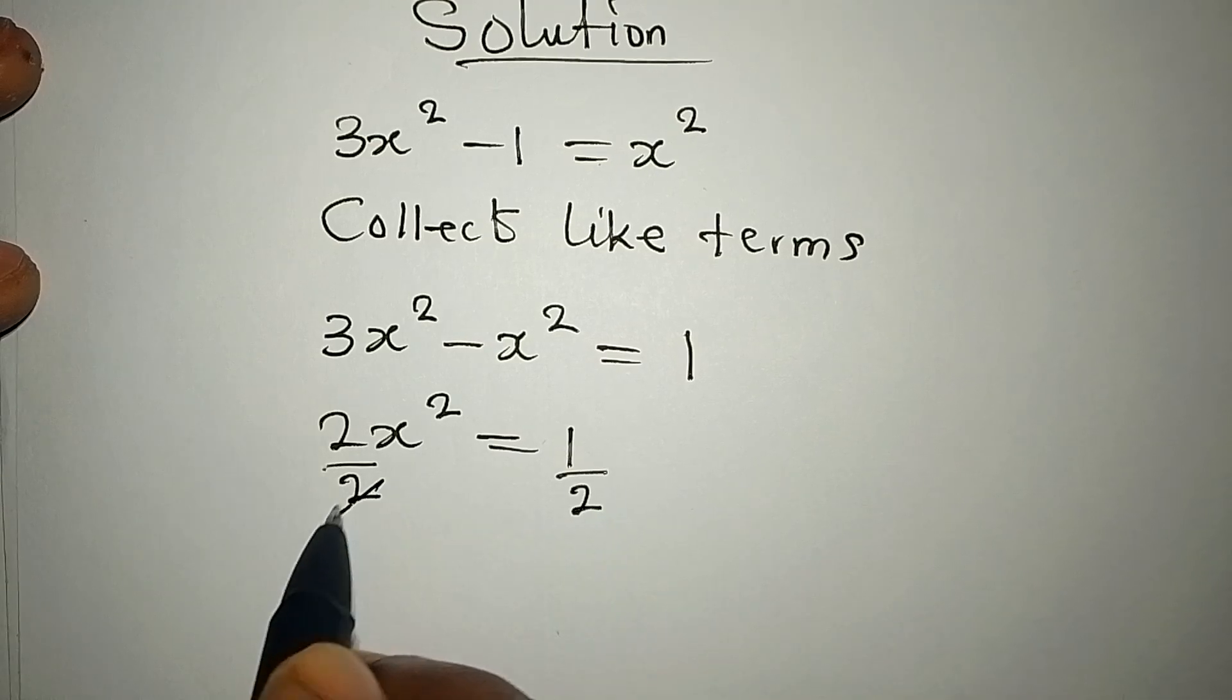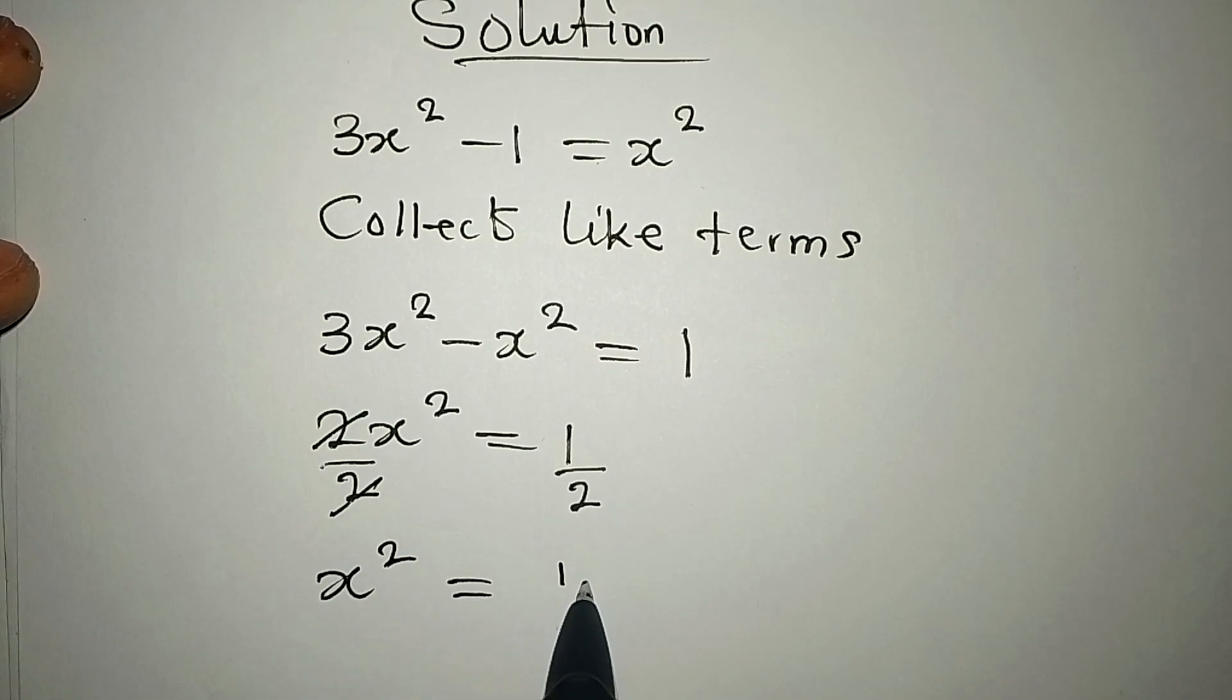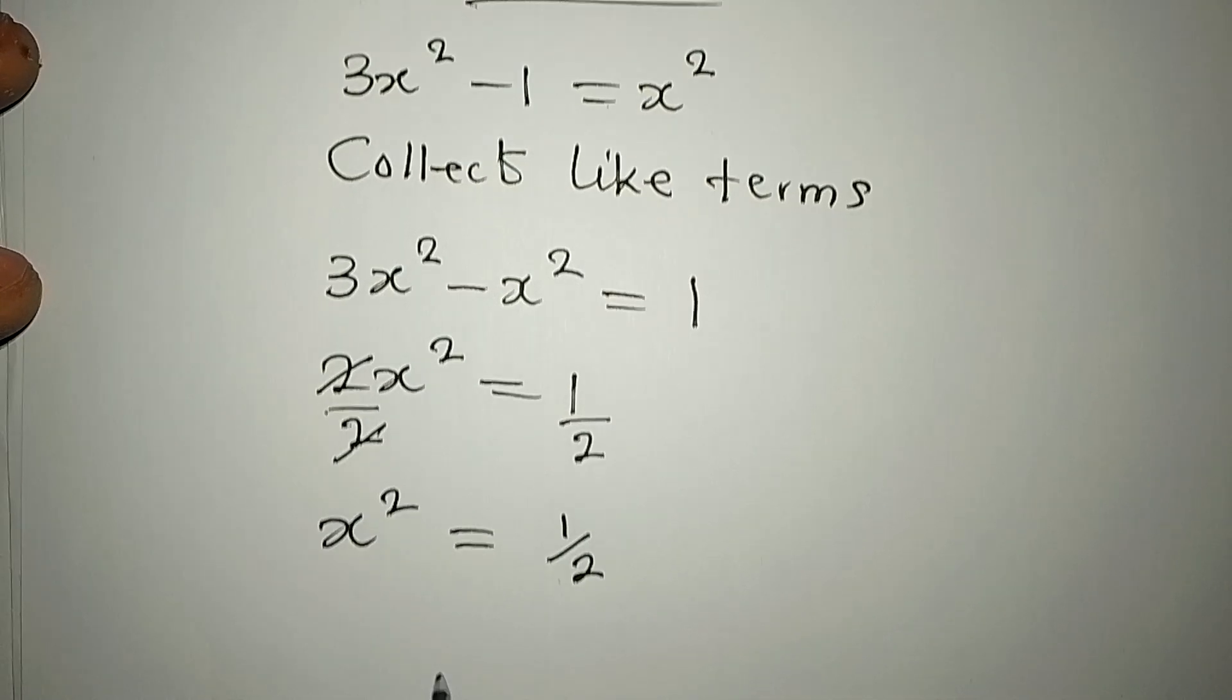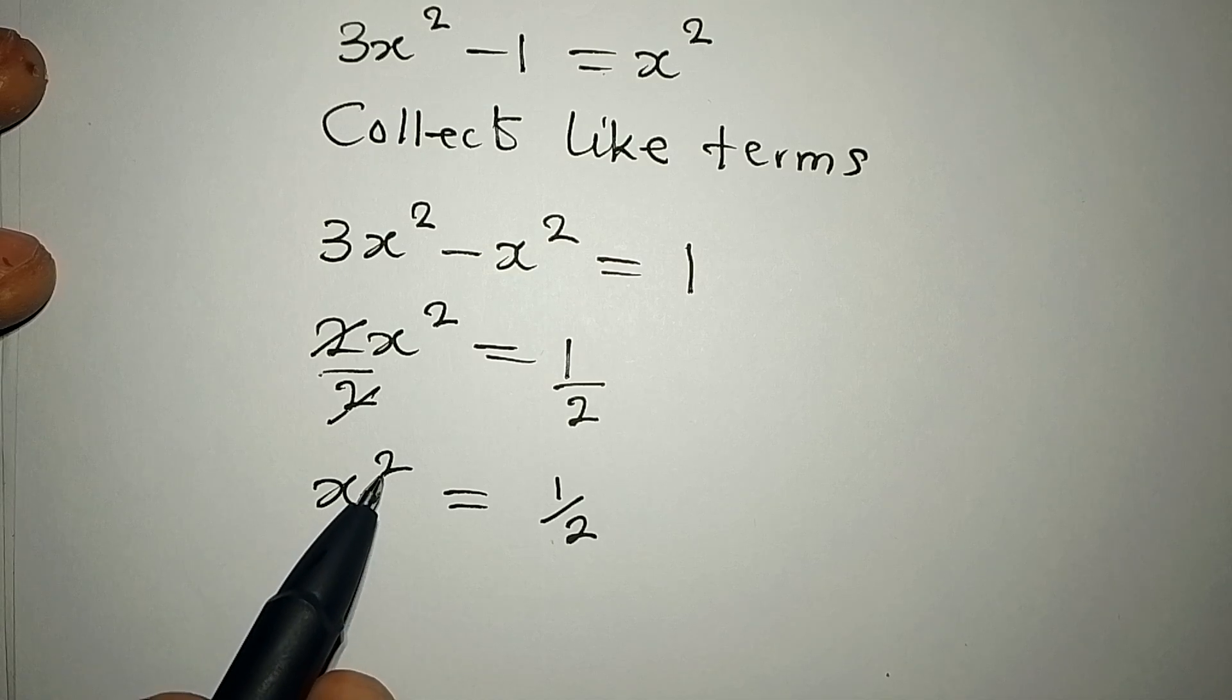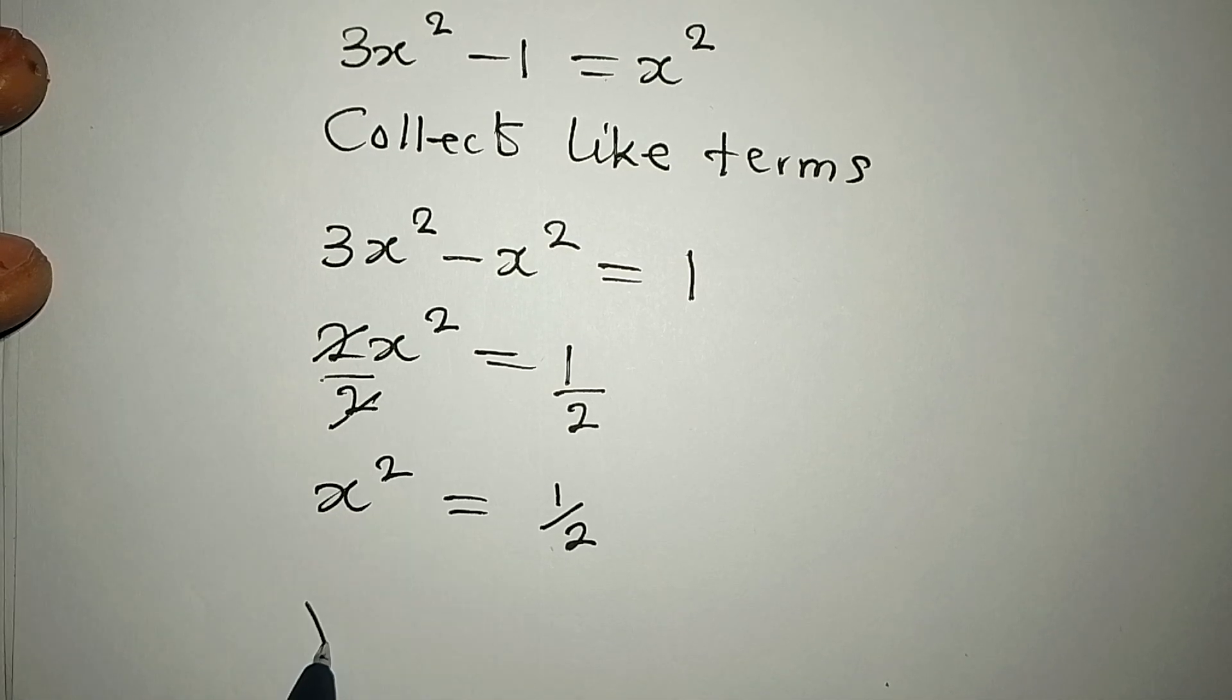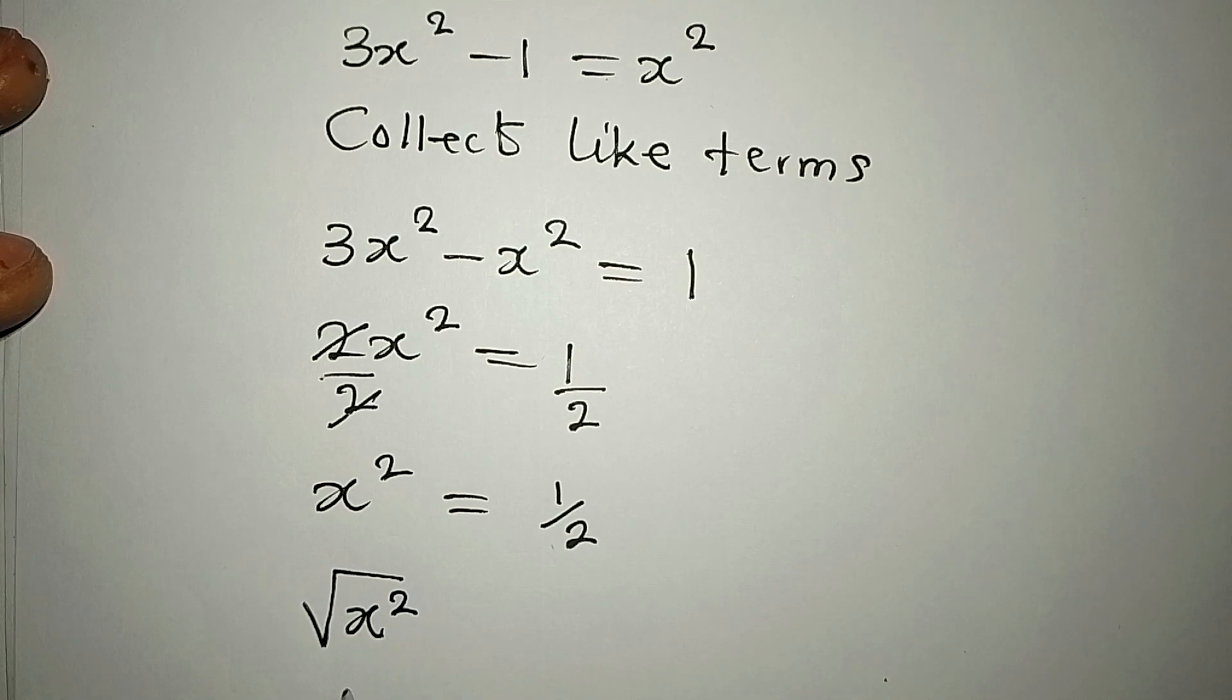Now x² = 1/2. But do not forget that we should remove this square so that we can get the value of x. To remove the square, we'll take the square root of both sides.